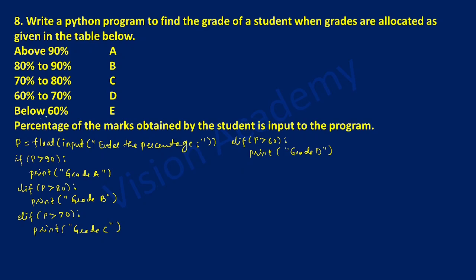So we can check out that below 60% grade E should be displayed. If this condition is false then the else part will get executed. I am going to write else colon, and with indentation write print. In double quotation marks I am going to write grade E. End the double quotation mark and close the bracket.